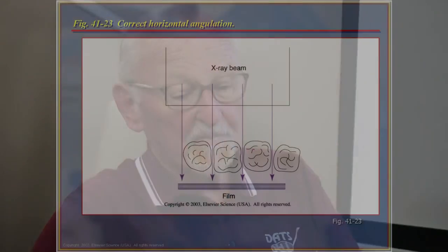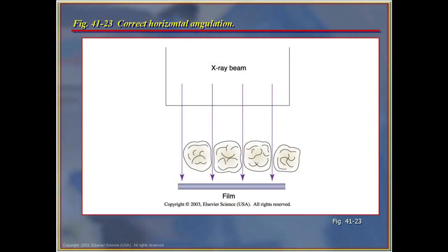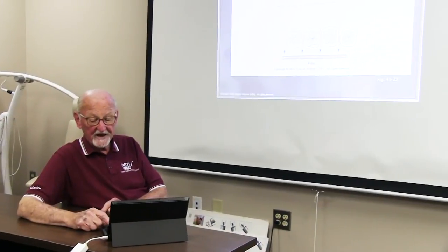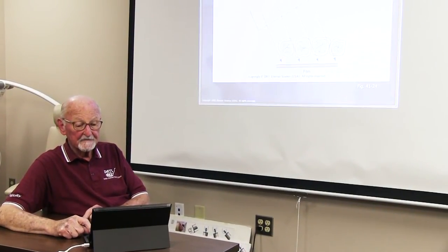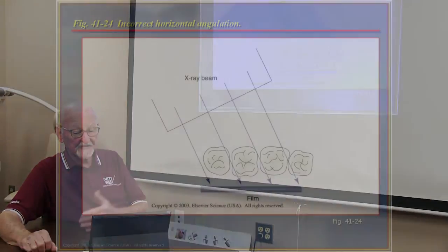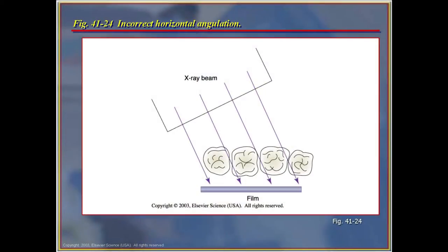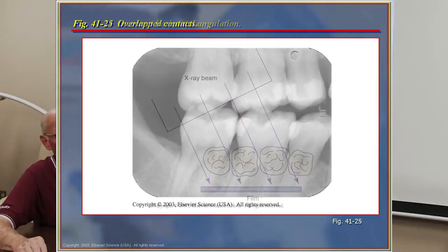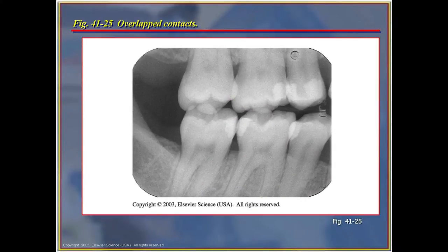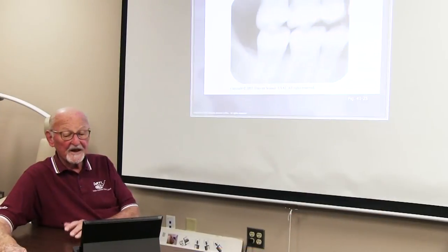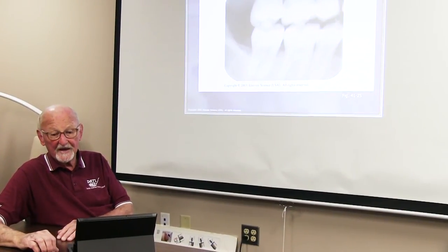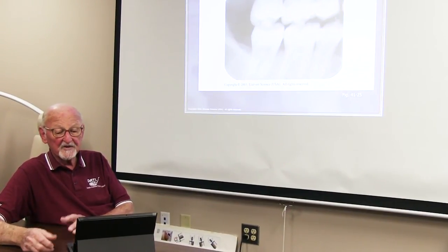This slide shows the appropriate position of the x-ray beam to pass through each contact appropriately. Incorrect horizontal angulation gives you a picture where the contacts between the posterior teeth are overlapped and non-diagnostic, and the film must be retaken.